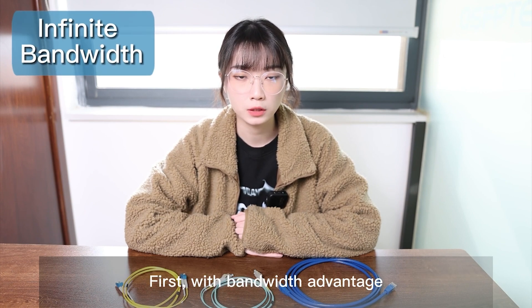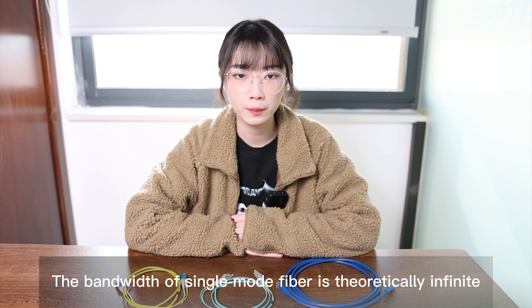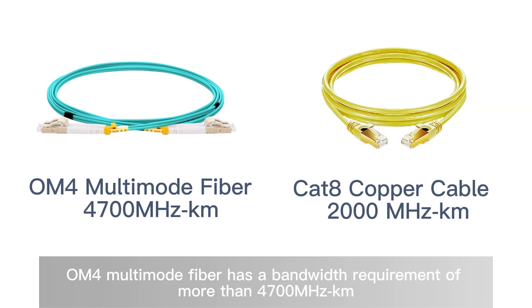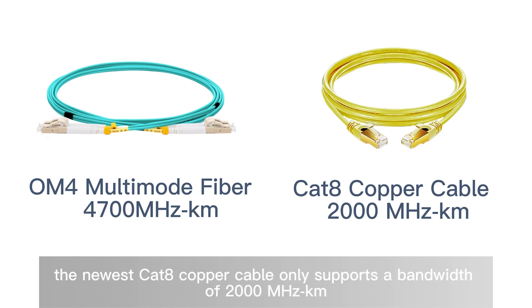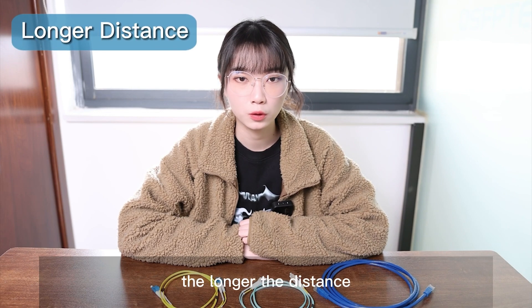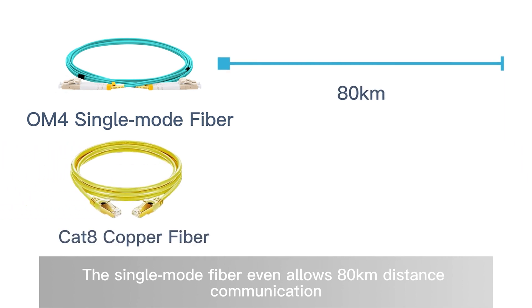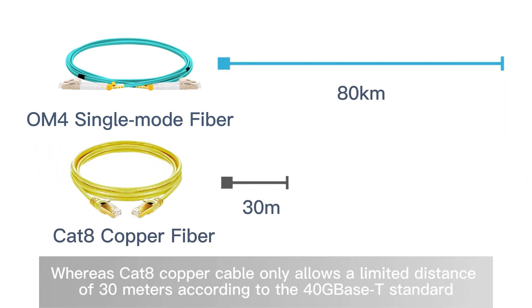First, with the bandwidth advantage: the bandwidth of single-mode fiber is theoretically infinite. As for multi-mode fiber, OM4 multi-mode fiber has a bandwidth requirement of more than 4700 MHz·km. When it comes to copper cable, the newest Cat8 copper cable only has a bandwidth of 2000 MHz·km. The higher the bandwidth, the longer the distance — single-mode fiber allows up to 8 km, whereas Cat8 copper cable only allows a limited distance of 30 meters according to the 40GBASE-T standard.